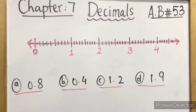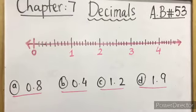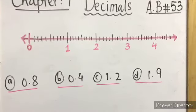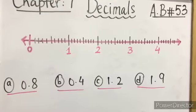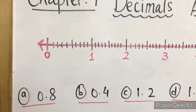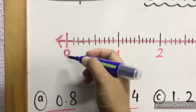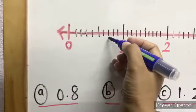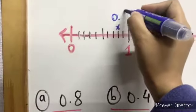Let's practice some number line questions on activity book page 53. Put the given decimals on the number line; mark with X and write the decimal above it. Part A is 0.8. The number line starts at 0, so count 8 lines: one, two, three, four, five, six, seven, eight — mark X there and write 0.8.